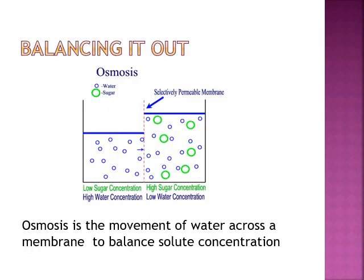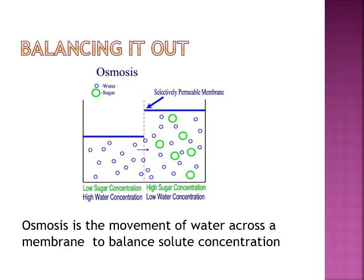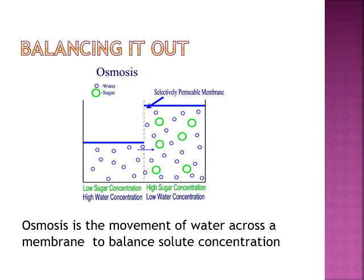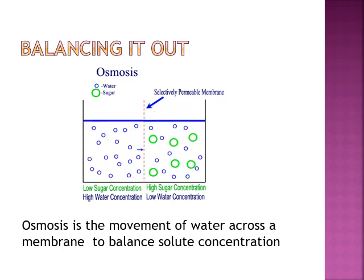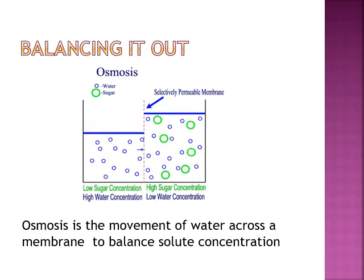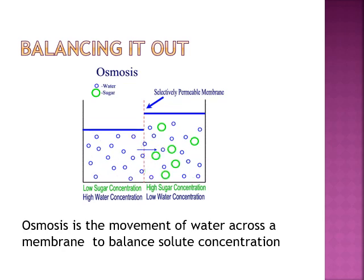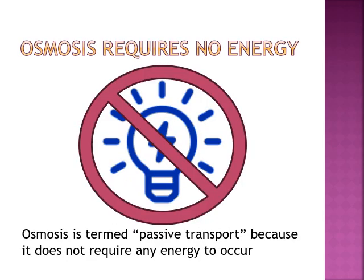That movement of water is called osmosis. It balances out solute concentration. Osmosis is a type of transport termed passive because it requires absolutely no energy. There's also active transport that requires energy — but osmosis is passive.